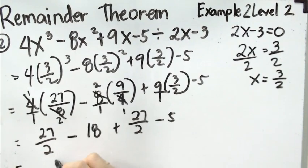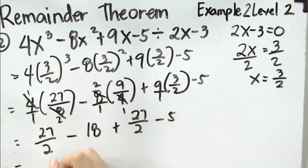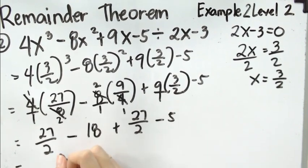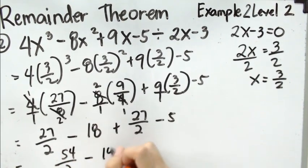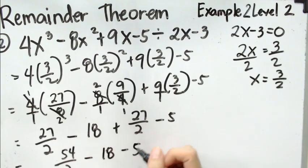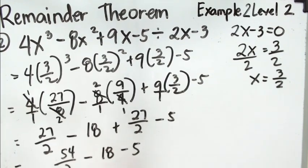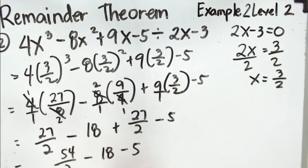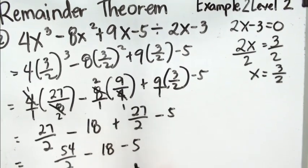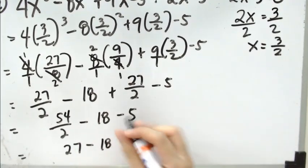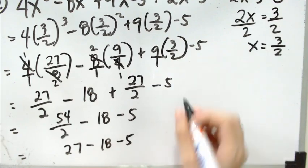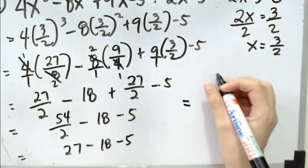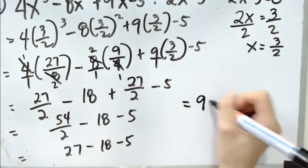27 over 2 plus 27 over 2, we get 54 over 2 minus 18 minus 5. So, 54 over 2 is 27 minus 18, sorry, minus 5. And 27 minus 18 minus 5 is 9 minus 5.